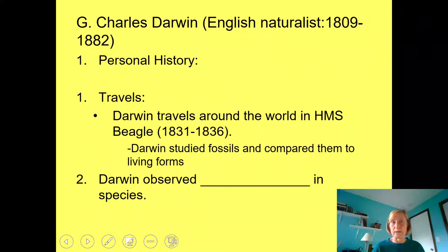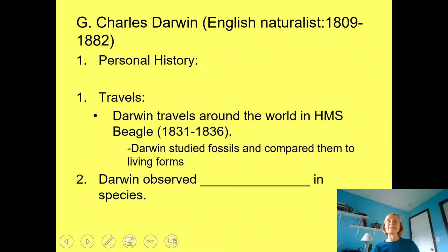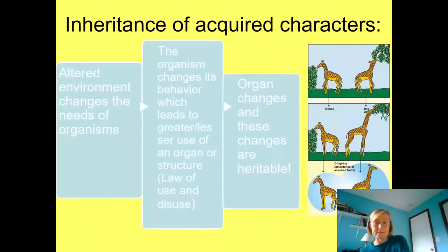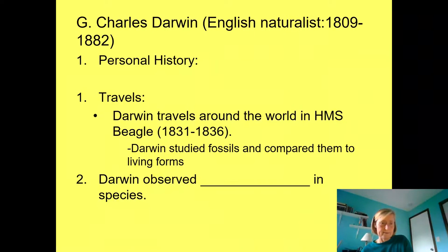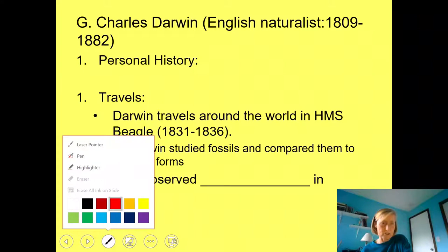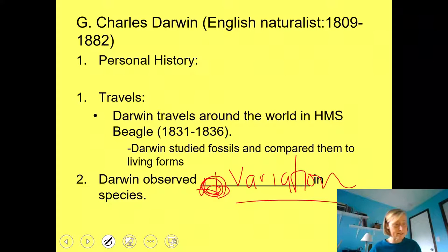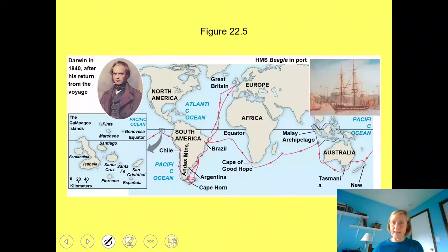The ship was going to go all around the world and do some exploration. While he was on the ship, he wrote dozens of notebooks making careful observations about animals, plants, and geology. He also collected thousands of specimens and took them all home to England five years later. What Darwin observed was variation in species.